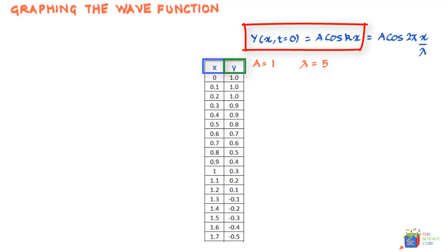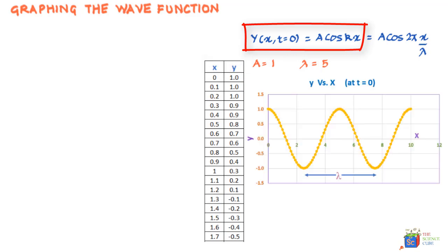So you can see that for various x values in this column, if you put these x values in this equation, these are the corresponding y values you'll get. And if you make a plot of y versus x, this is what you will get. So you can see the y position of various points at time t equal to zero.